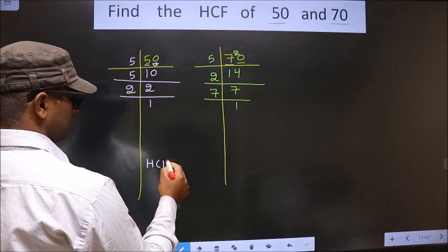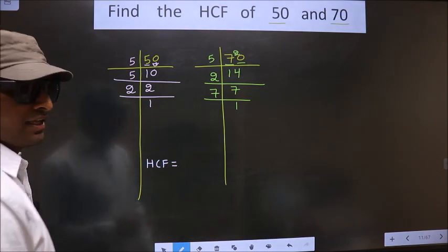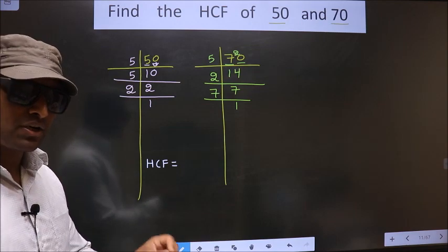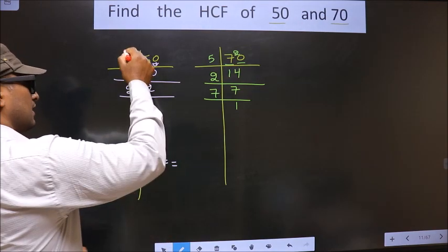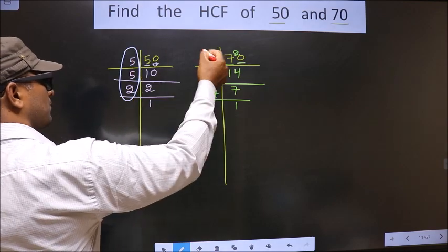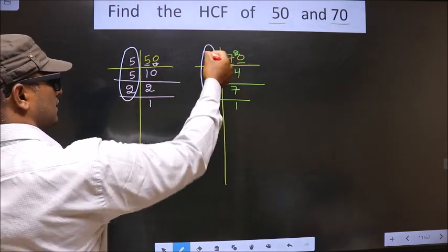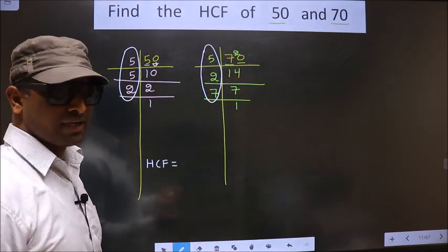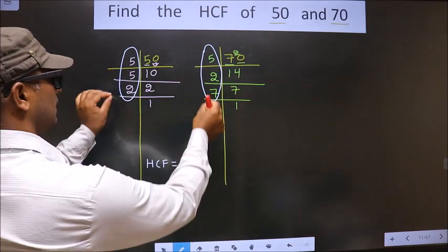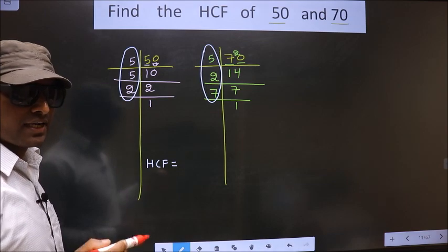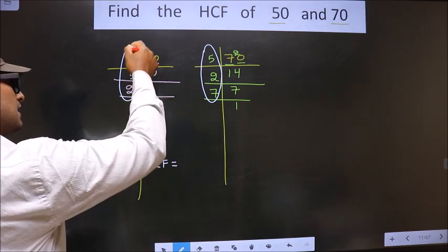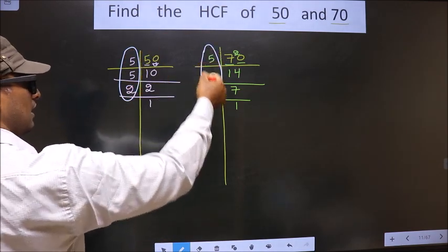So our HCF is the product of numbers that are present here and also here. So now we should find the numbers that are present in these two places. I repeat, we should find the numbers that are present here and also here.